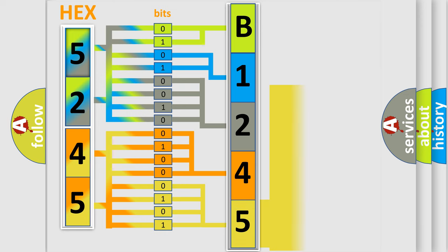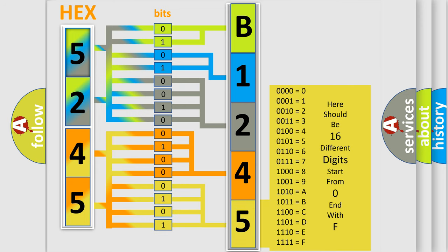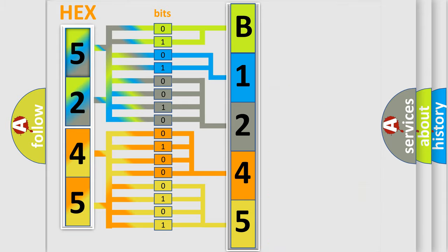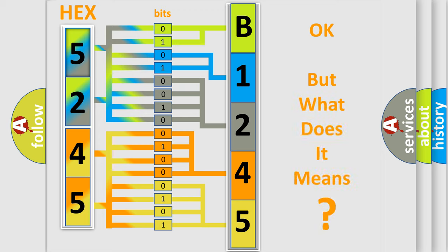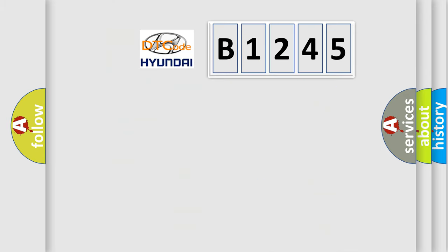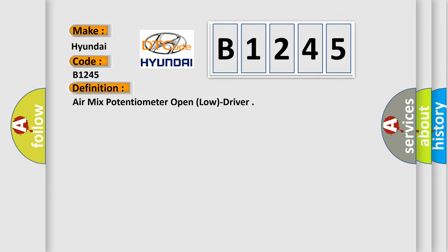A single byte conceals 256 possible combinations. We now know in what way the diagnostic tool translates the received information into a more comprehensible format. The number itself does not make sense to us if we cannot assign information about what it actually expresses. So, what does the diagnostic trouble code B1245 interpret specifically for Hyundai car manufacturers? The basic definition is: air mix potentiometer open, low, driver.